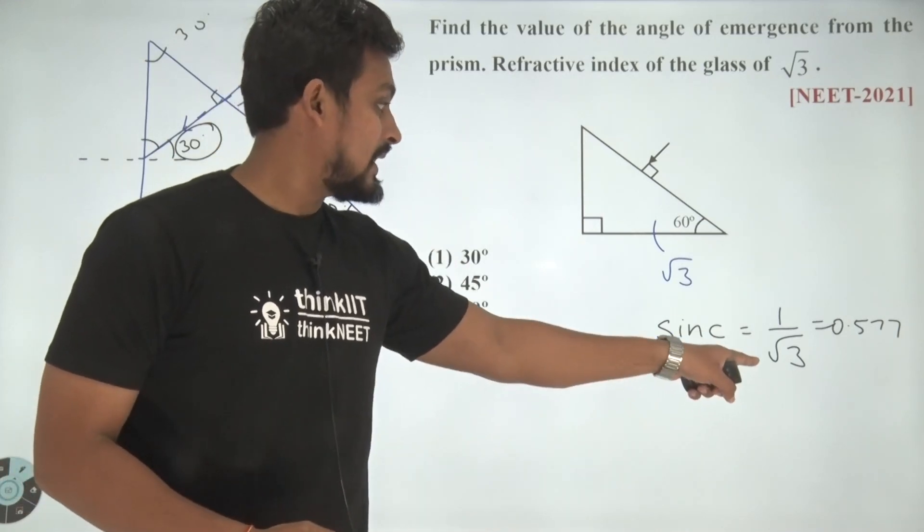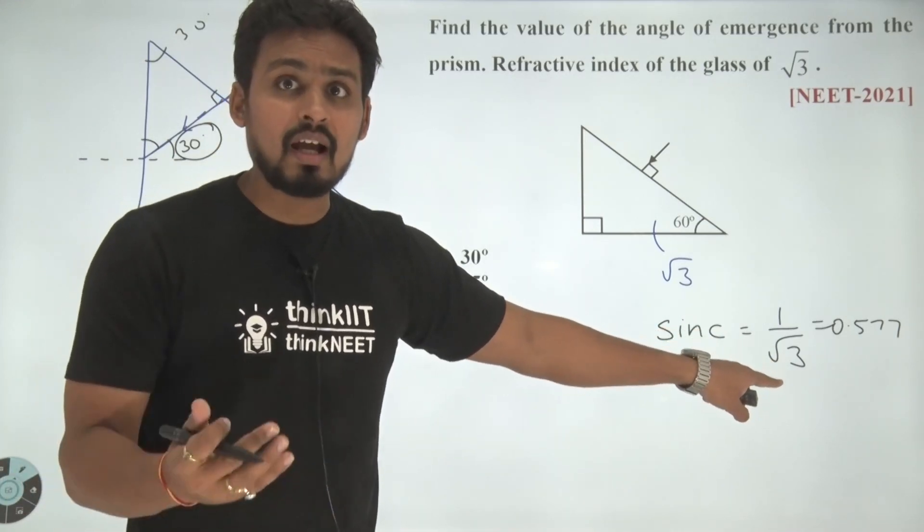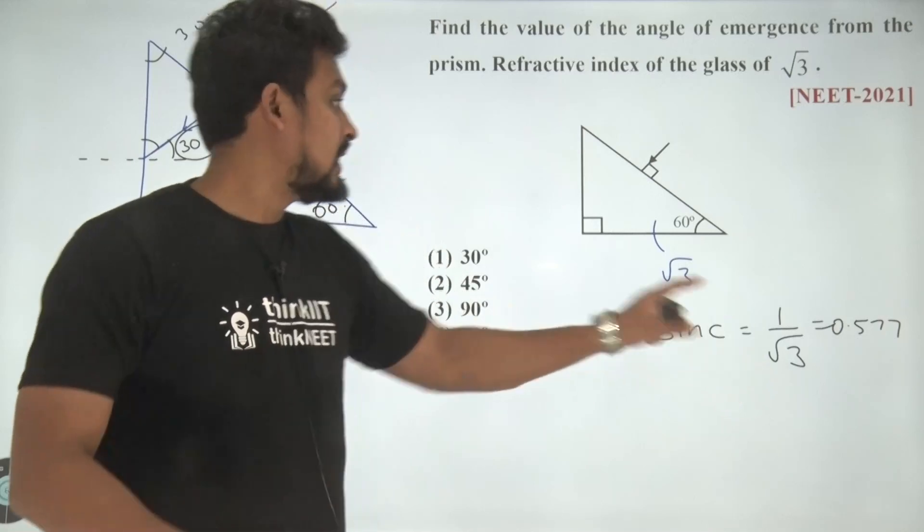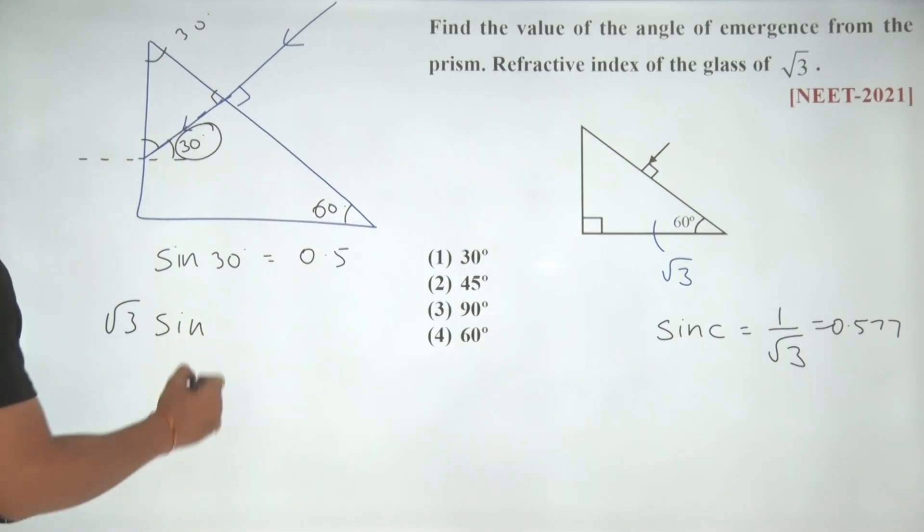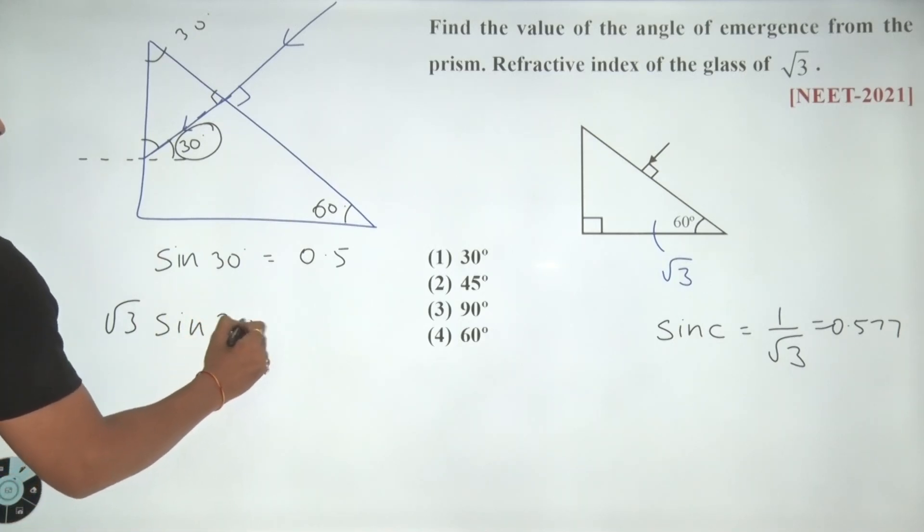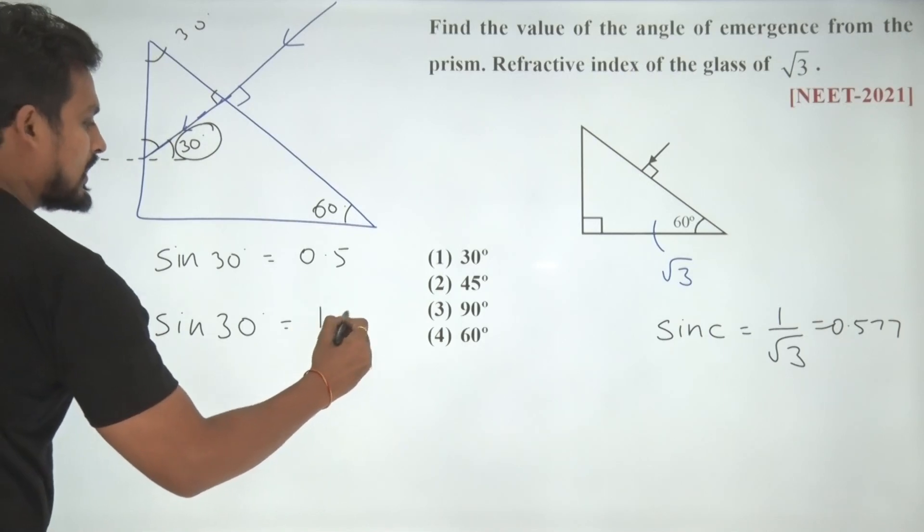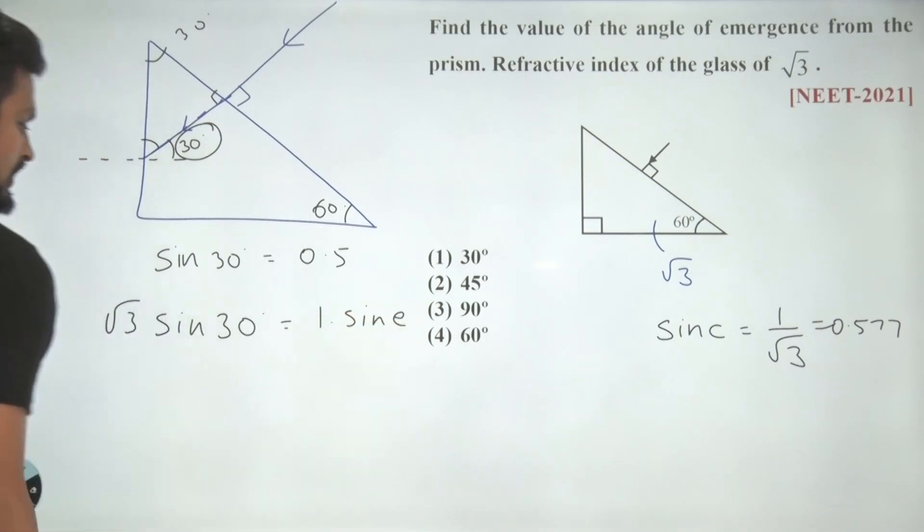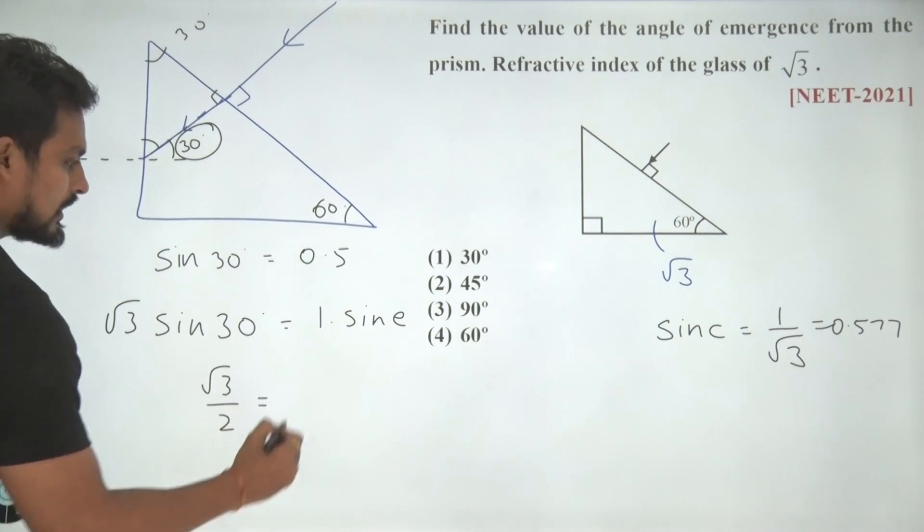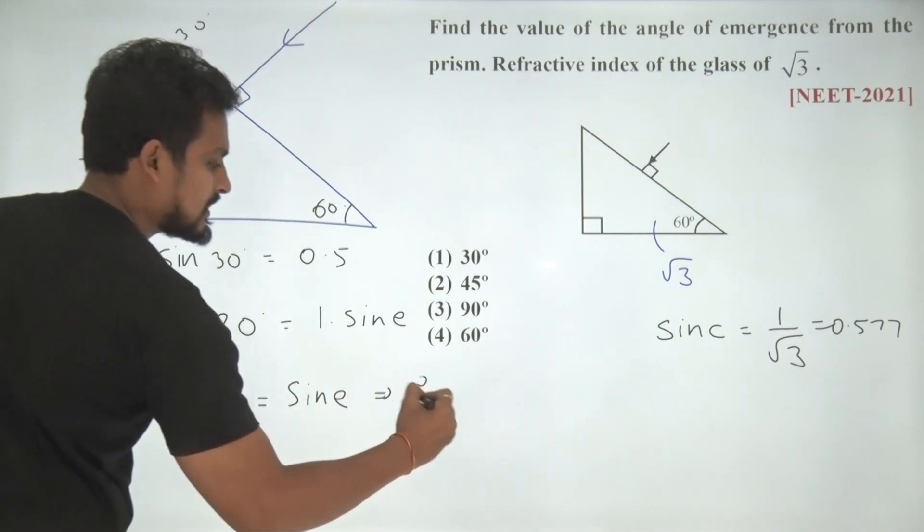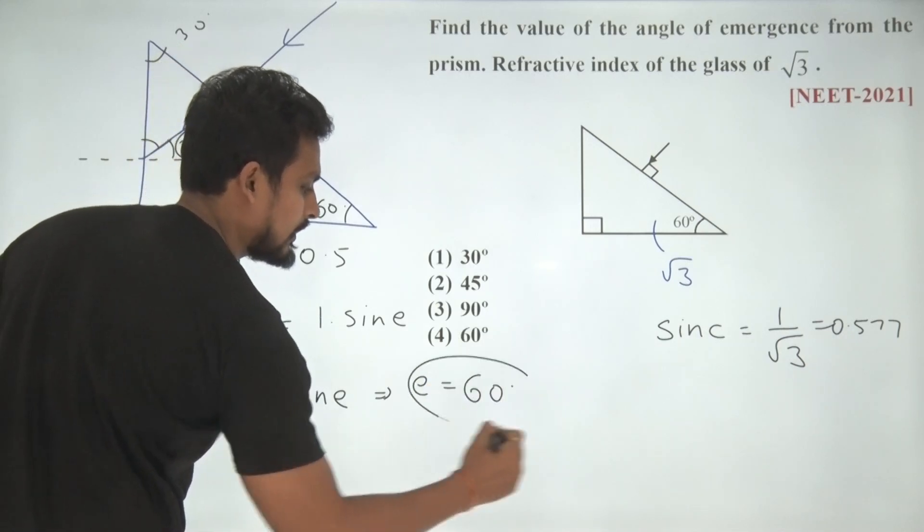So can I say TIR would not occur over here and therefore I can write down root 3 into sin of 30 degree is equal to 1 into sin of emergent. This would give me root 3 by 2 is equal to sin of emergent, implies E is equal to 60 degree.